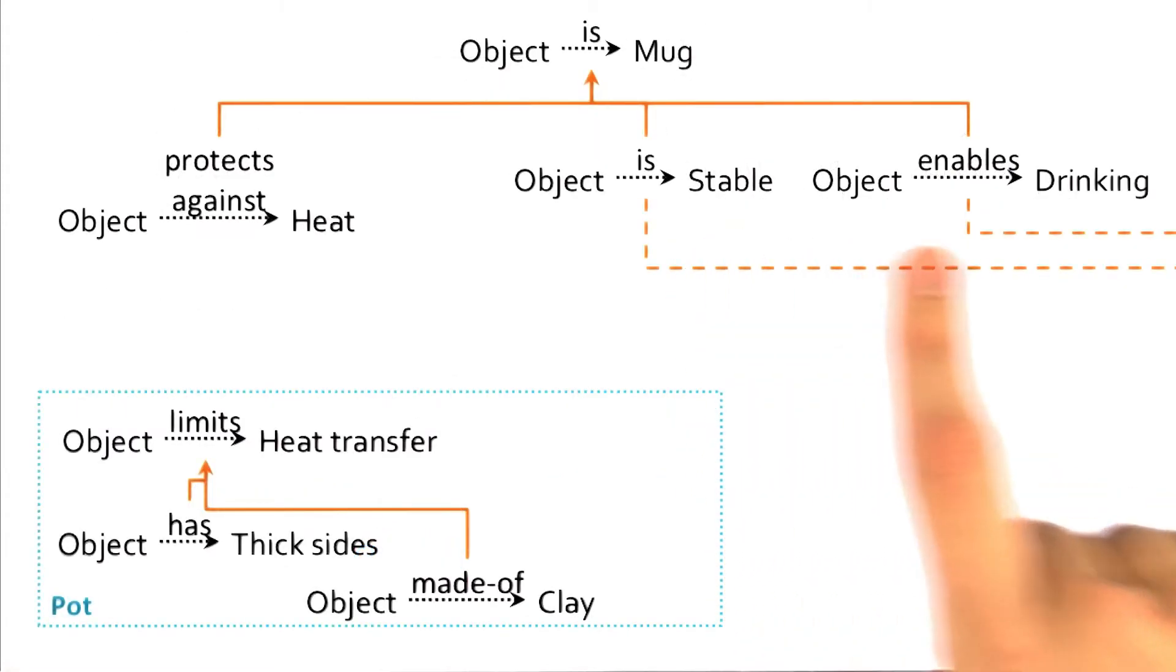We can prove that the object is stable and enables drinking, based on what we saw with the proof of the cup. The object we're dealing with here had all the same criteria as our object in the other example, in addition to these thick sides and being made of clay.